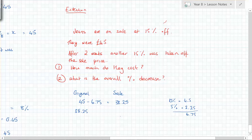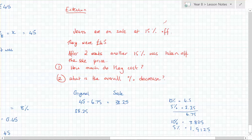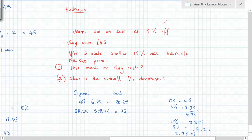Then we take 15 percent of £38.25: 10 percent is £3.825, 5 percent is £1.9125, add them together to get £5.7375. Subtracting gives a final answer of £32.51. That's a long way around — did you get the right answer?